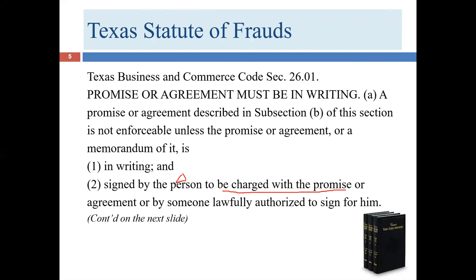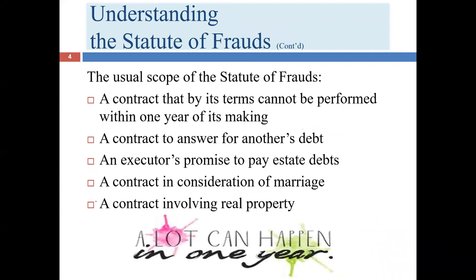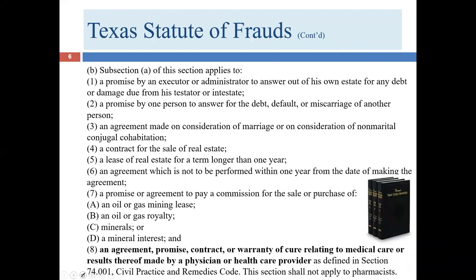Subsection B lists the categories to which section A applies. You can see we actually have eight categories here — the Texas statute divides things a bit differently than our textbook does. The first category is: a promise by an executor or administrator to answer out of his own estate for any debt or damage due from his testator or intestate — the person who died whose estate he's administering.